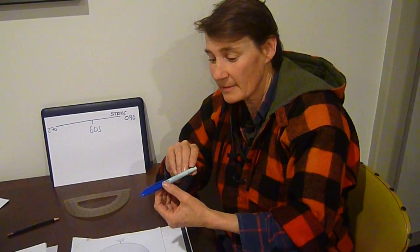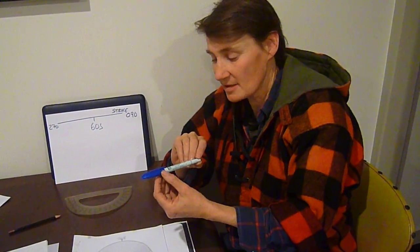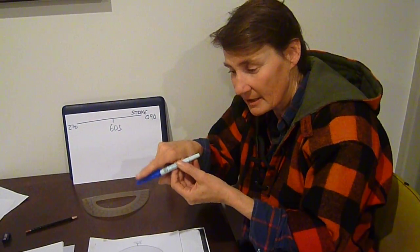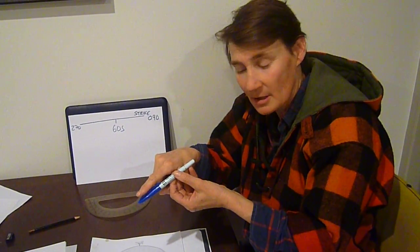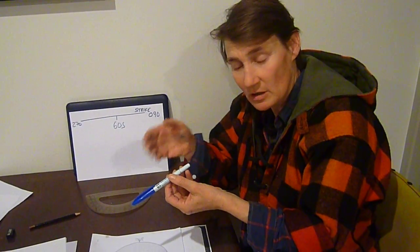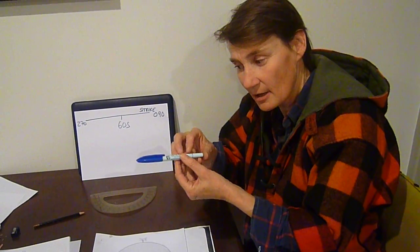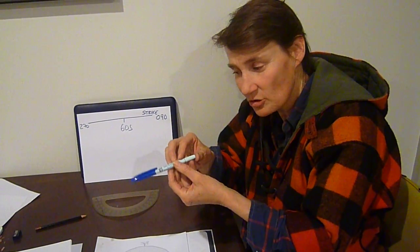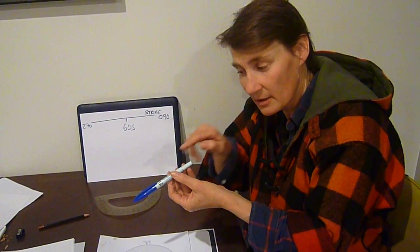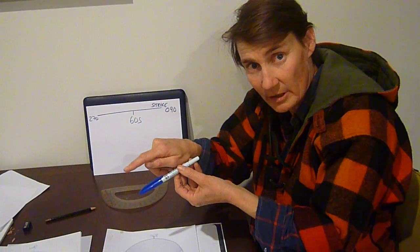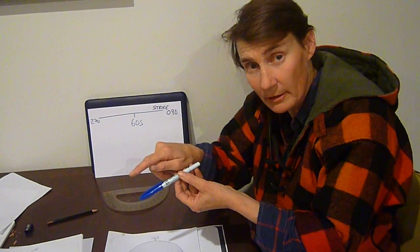So far we've talked about lines in space having a bearing and a plunge, and the way we've described them is to say that the line plunges a certain amount in a particular direction or bearing.